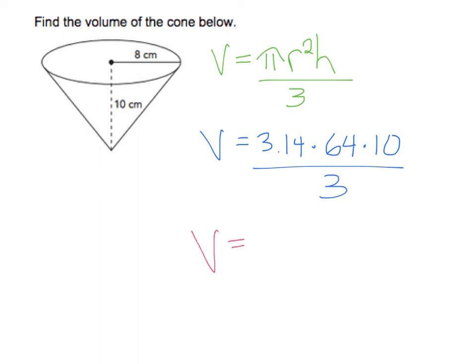So now you will do 3.14 times 64 times 10, which gives us 2,009.6. And then we divide it by 3.